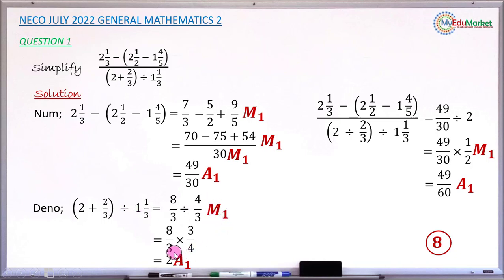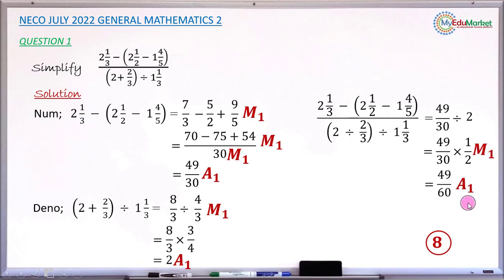The next method mark is for simplifying the denominator by changing mixed fractions to improper fractions. When you arrive at the simplified denominator of 2, you earn an accuracy mark. The next mark is for substituting the simplified numerator and denominator into the full fraction, earning a method mark. And when the final answer of 49 over 60 is correctly obtained, you earn a final accuracy mark. In total, this question carries 8 marks.